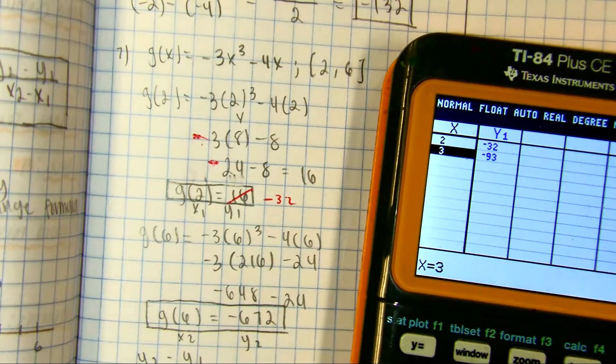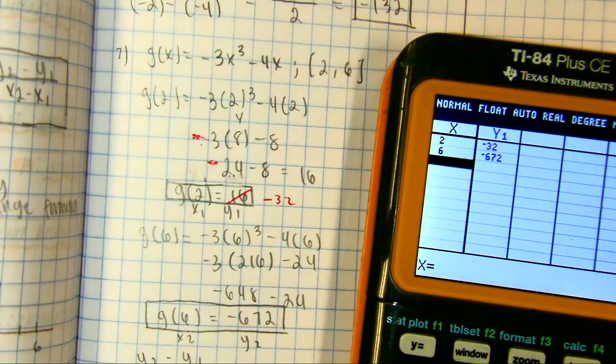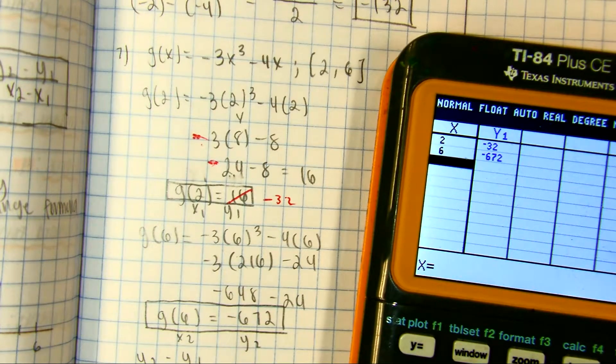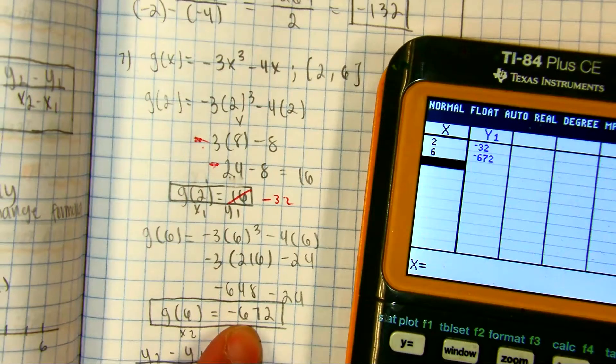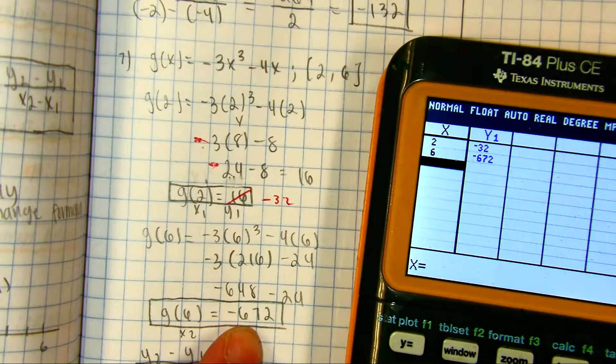If I substitute in 6, raise your hand if you got negative 672. So, this student got that for the second one. Did you see it? So, I already have the answers.